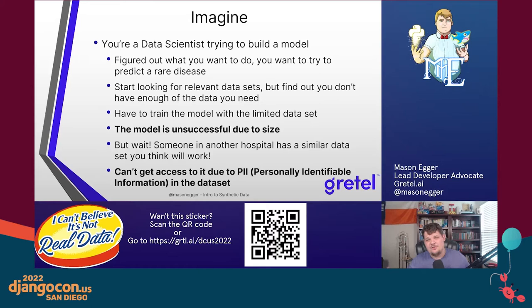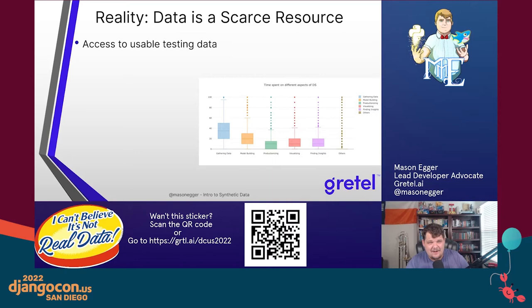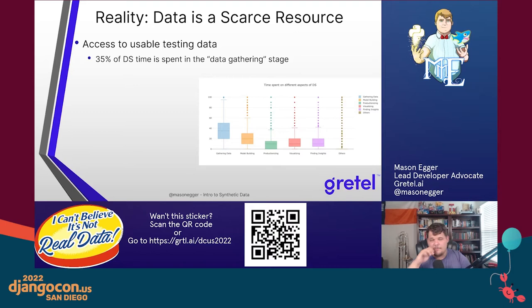As you listen to these two narratives and think about the common theme, you realize: data is a scarce resource. It's not something everybody has access to, but it's something most developers need — all data scientists, machine learning engineers, people need data. Most of the time we don't have access to usable testing data. 35% of all data science time is spent in the data gathering stage, not even in the fun parts. And data is often inaccessible due to PII — even if you can get it, you can't really access it.